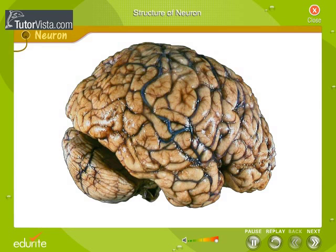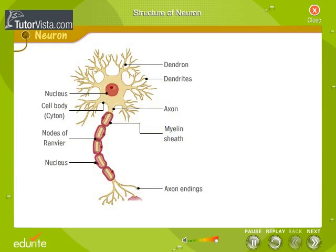The generalized structure of a neuron is displayed here. A neuron consists of a cell body called the cytin, having a nucleus, and many energy-providing mitochondria and protein-making ribosomes. A long process arising from the cytin is the axon.